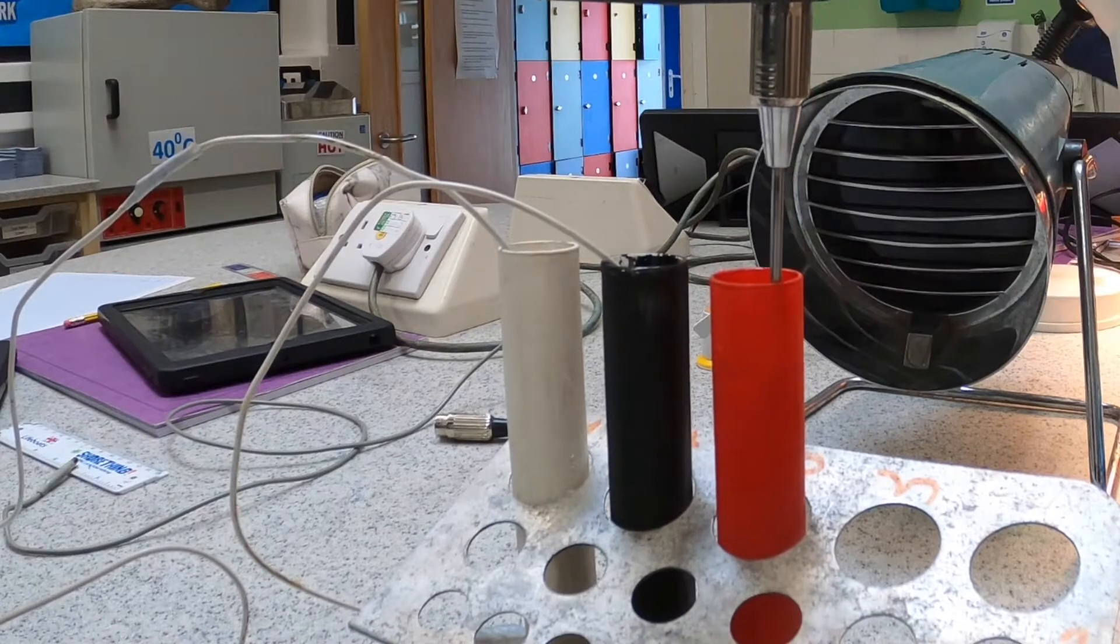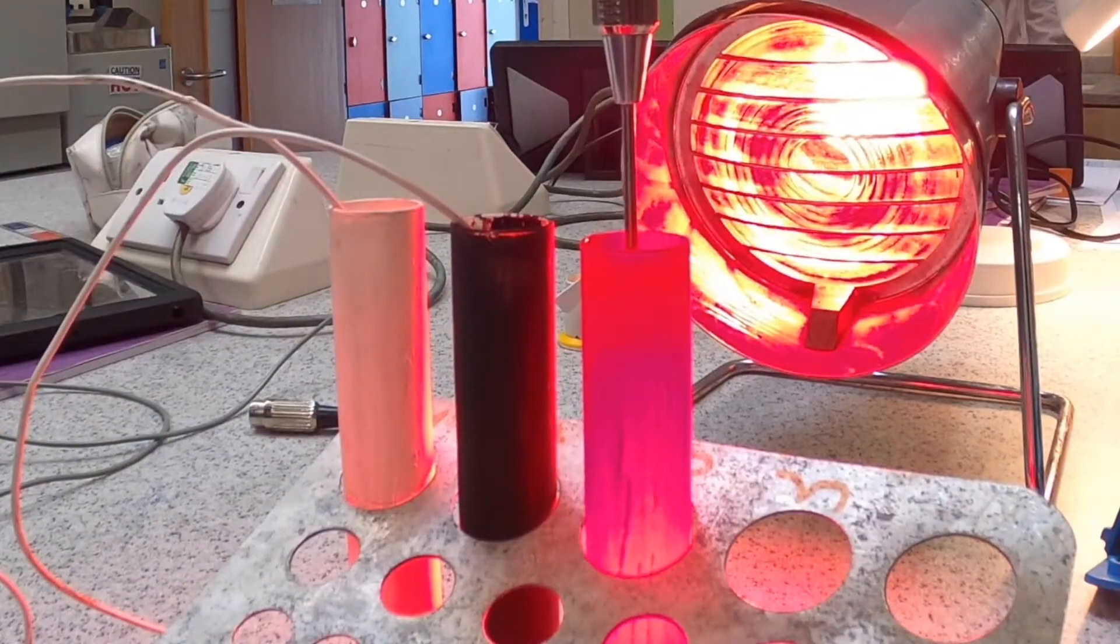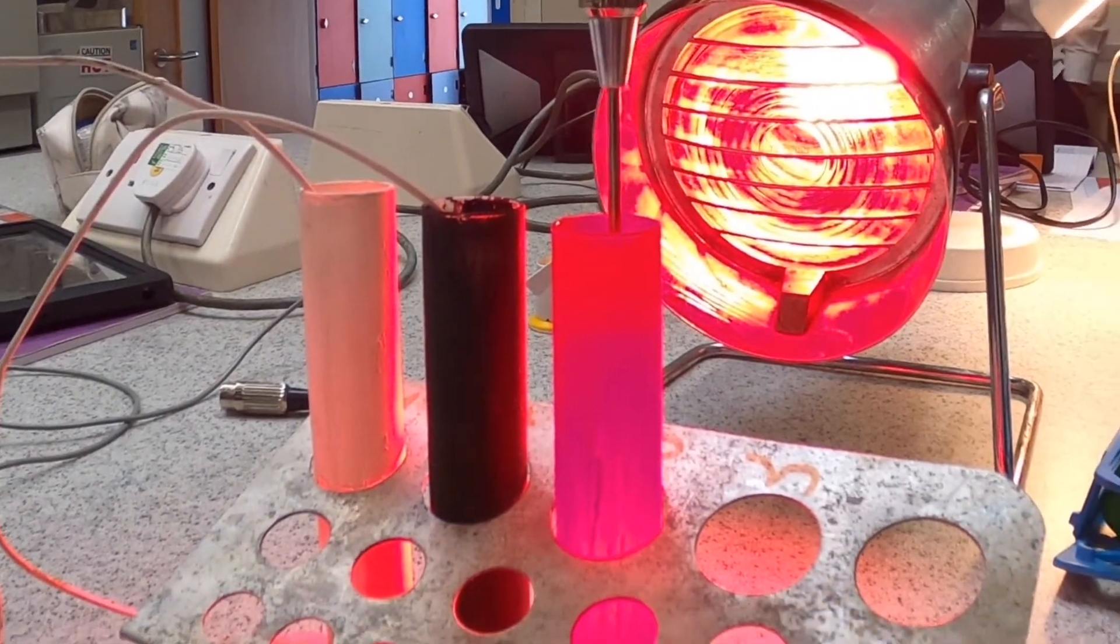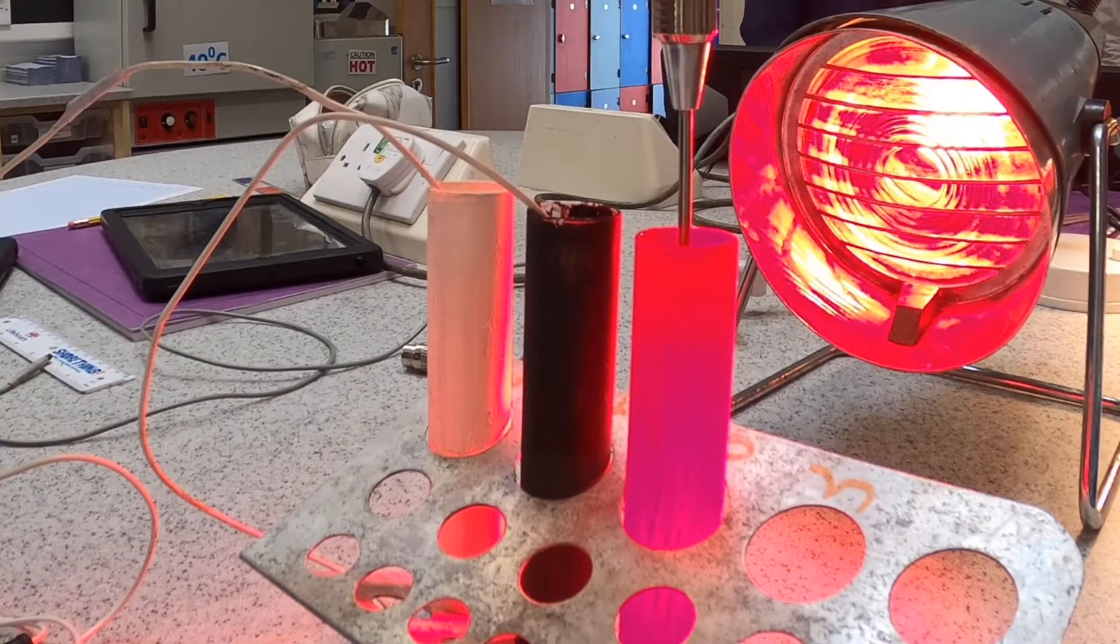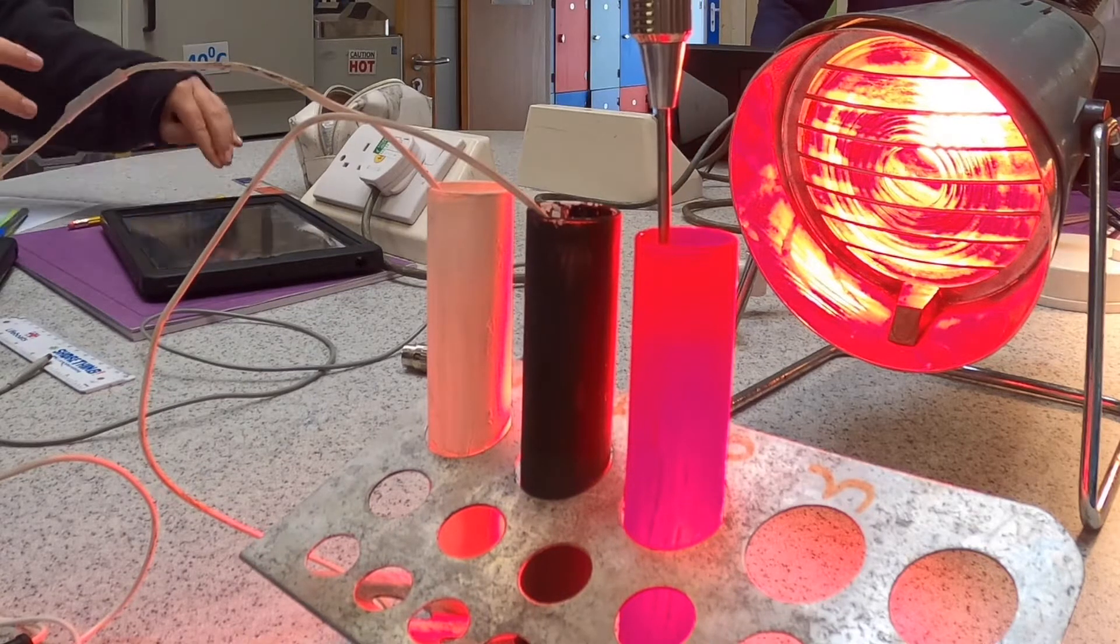So here we go, here's how we set this up. We've got three test tubes of water: white, black, and red. Then we put the infrared lamp on as an emitter of infrared radiation. So the water will absorb infrared radiation and warm up.